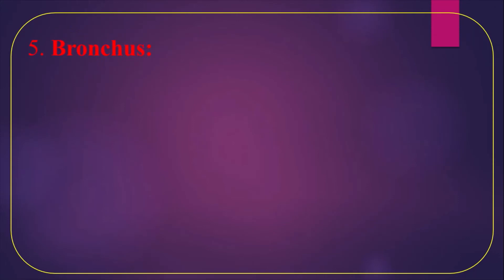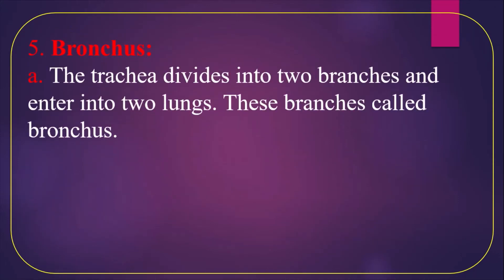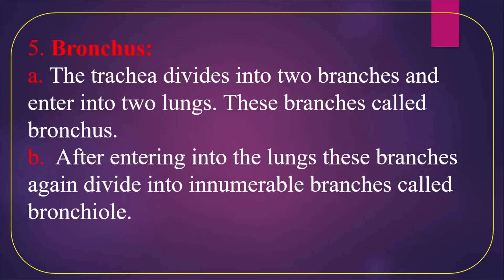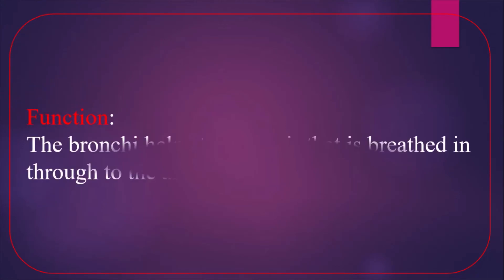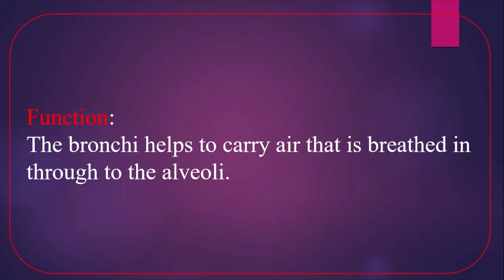Bronchus: the trachea divides into two branches that enter the two lungs — these branches are called the bronchus. After entering the lungs, they divide further into innumerable branches called bronchioles. The structure of a bronchus is like the trachea, but with a smaller, narrower diameter. Function: the bronchus helps carry inhaled air to the alveoli.